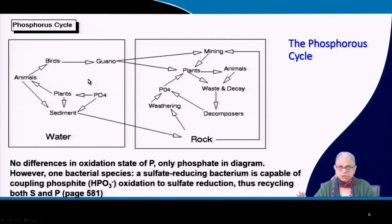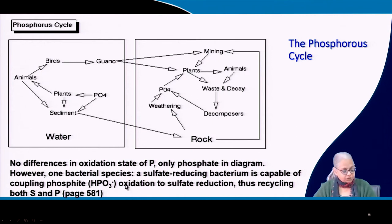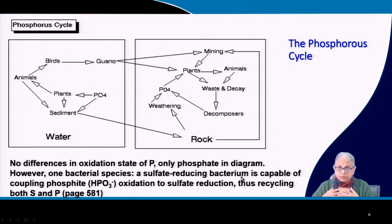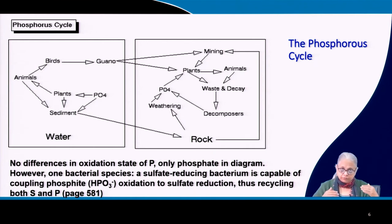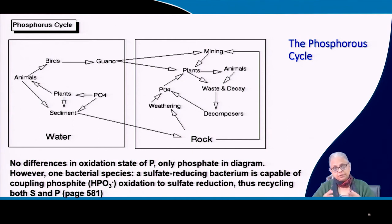There is no oxidation-reduction reaction for phosphorus except one bacterial species that has been observed — a sulfate-reducing bacterium that can couple phosphite oxidation to sulfate reduction, thus recycling both sulfur and phosphorus. Phosphite is a reduced form of phosphorus.